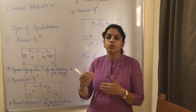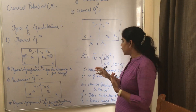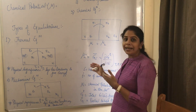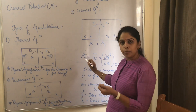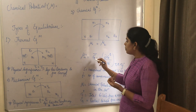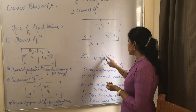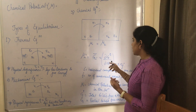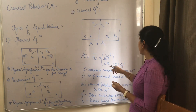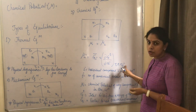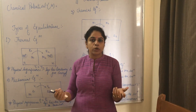Chemical potential is also known as the partial Gibbs free energy of any component I. It is the form of potential that can be absorbed or released during a reaction. mu_I, the chemical potential, is equal to the partial Gibbs free energy of component I, and is given by the partial derivative of total Gibbs free energy with respect to the change in number of particles of component I, while keeping T, P, and all other components J constant.